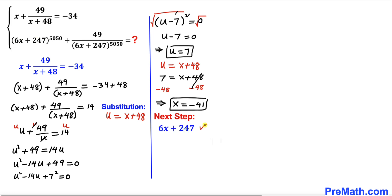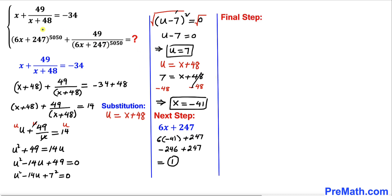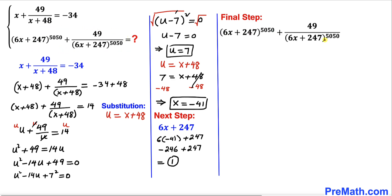Let's focus on the base 6x plus 247 and substitute x equals negative 41. This expression becomes 6 times negative 41 plus 247, which equals negative 246 plus 247, giving us positive 1. So the value of 6x plus 247 turns out to be 1.